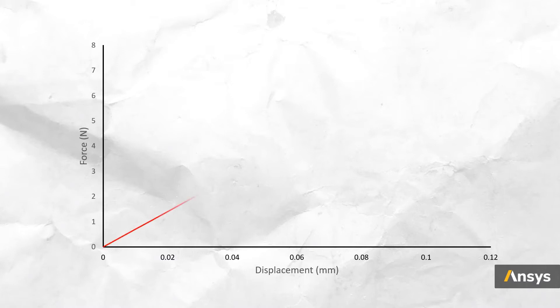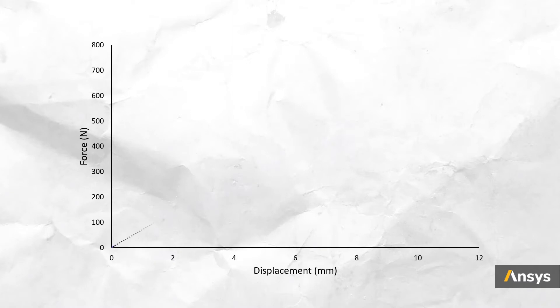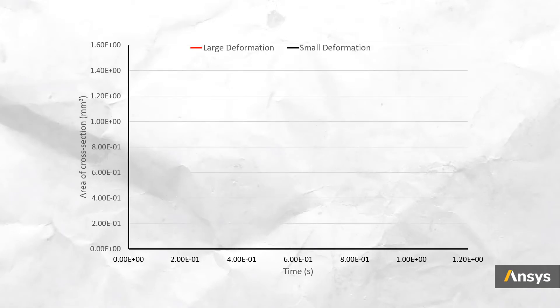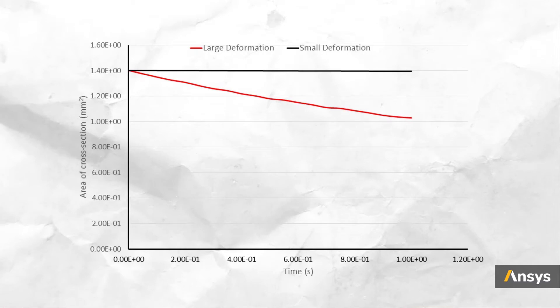During deformation, the area of cross-section of the sample decreases due to Poisson's effect, and this introduces nonlinearity. Let's start by plotting the force-displacement curve for the first case. As we can see, the response is linear and can be assumed to be a linear system. But when we continue to stretch it to a displacement of 10 mm in case 2, we start seeing that the force-displacement response deviates from the linear curve. This can be explained by monitoring the area of cross-section at the midplane during deformation. In case 1, the change in area of cross-section is very small, but as we increase the amount of deformation, the area reduces nonlinearly and starts affecting the system's response.